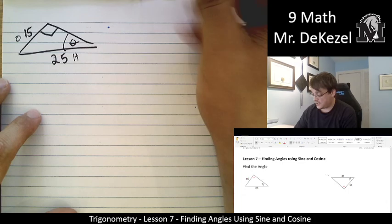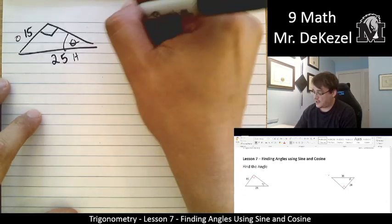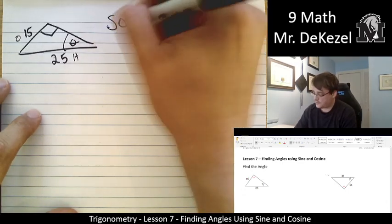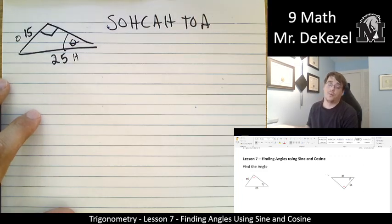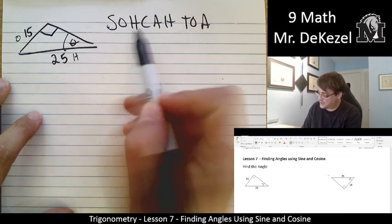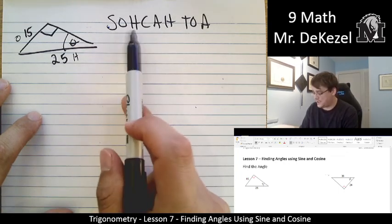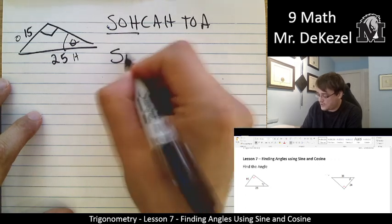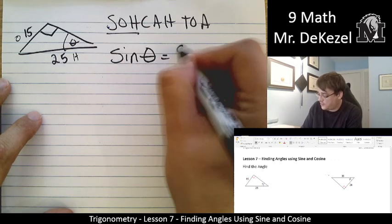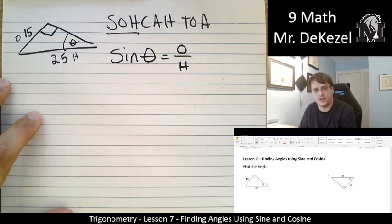And those are the two sides that we know. That's what we're going to be interested in. That is the opposite and hypotenuse. So, which trigonometric ratio should we use, sine, cos, or tan? Well, opposite and hypotenuse are in sine, so that means that our equation is sine of theta is equal to the opposite side over the hypotenuse side.